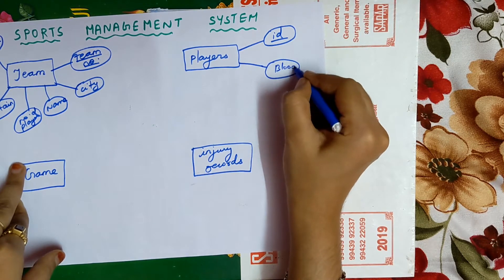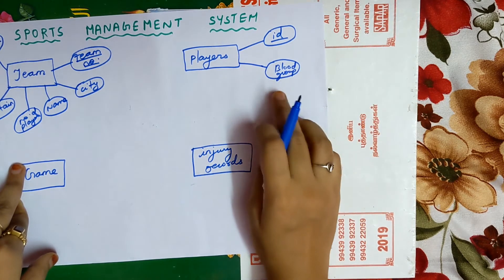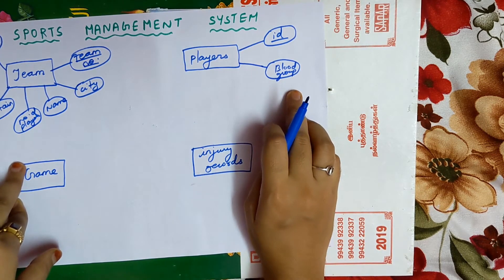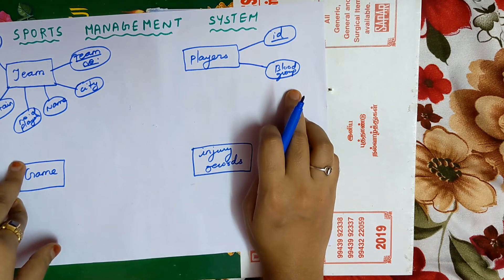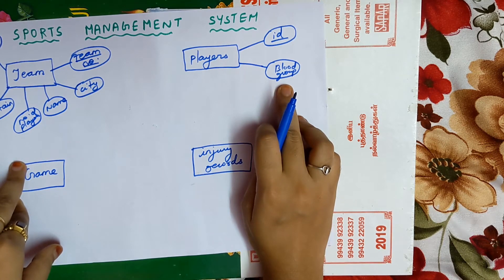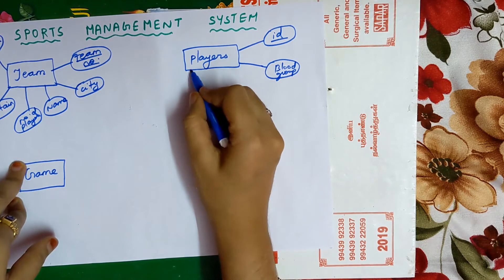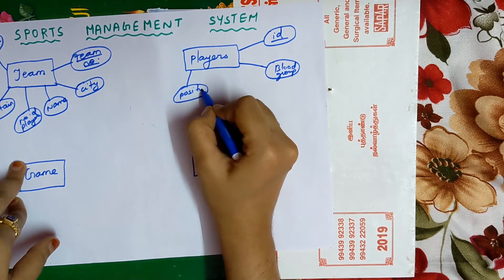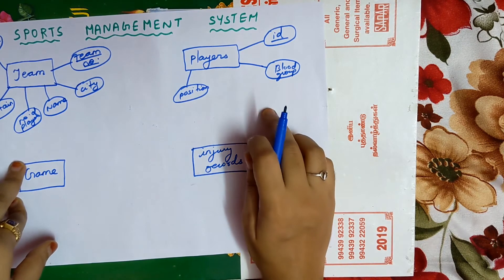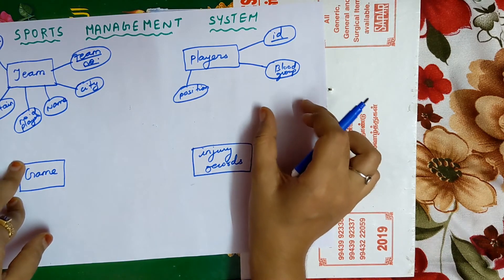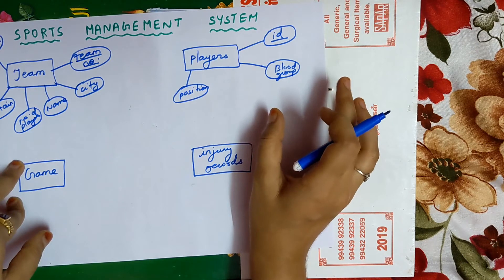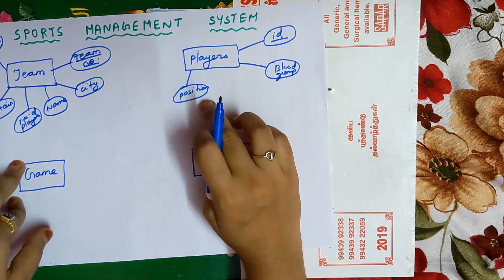The next attribute is blood group. Blood group of the player is very important because when an accident occurs, it is critical to know the player's blood group so that immediate action can be taken in emergency situations. The next attribute is position — the role given to a player in the game.